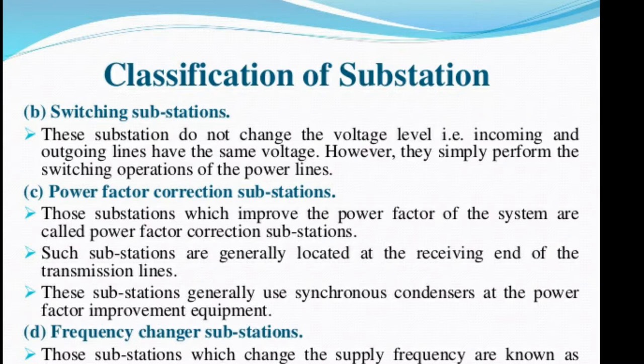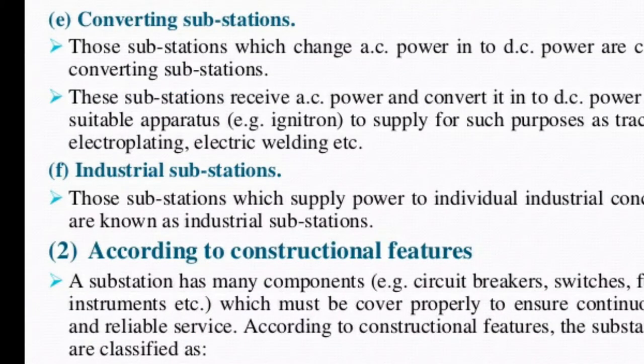If they correct power factor, then they are called power factor correction substations. If they change frequency, then they are called frequency-changing substations. If the substations change AC power into DC power, they are called converting substations. These substations receive AC power and convert it into DC power using an ignitron to supply traction, electroplating, electric welding, etc. — these are industrial substations.